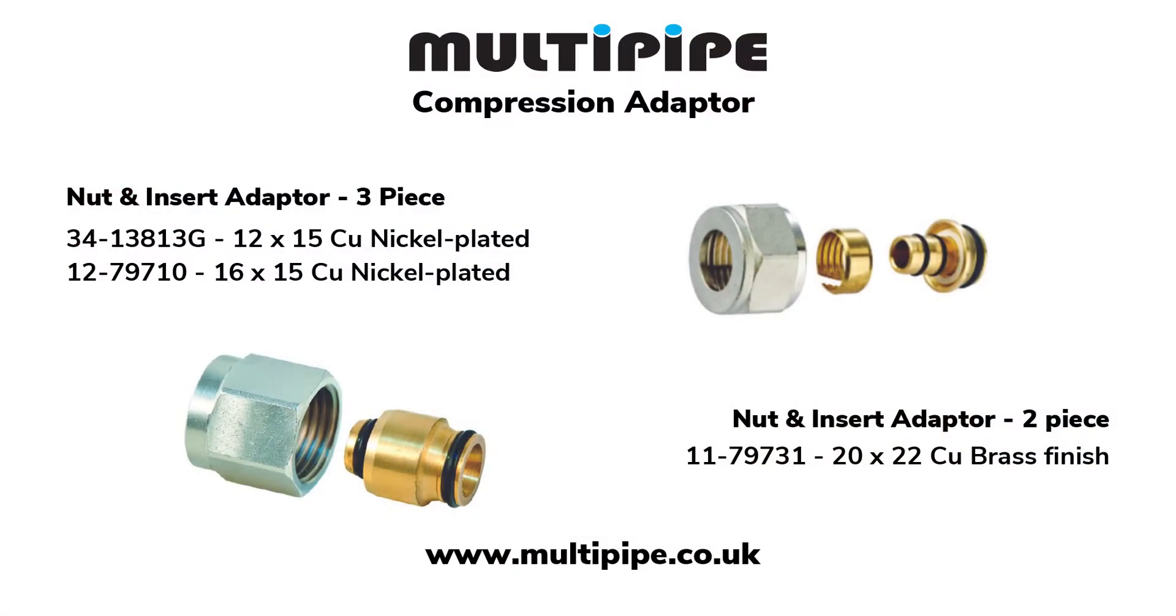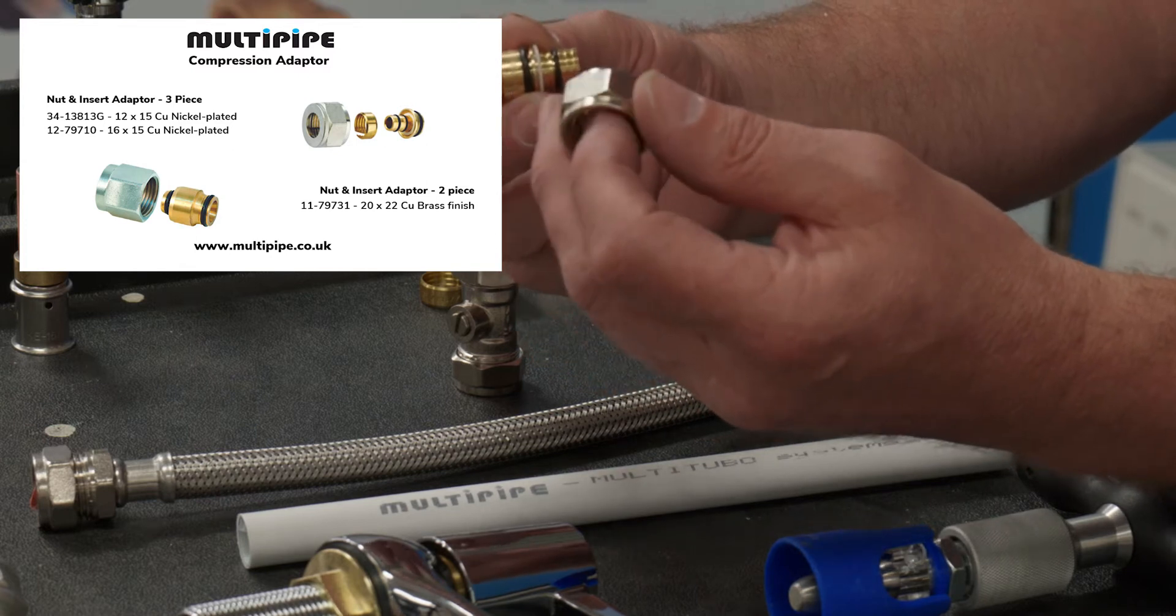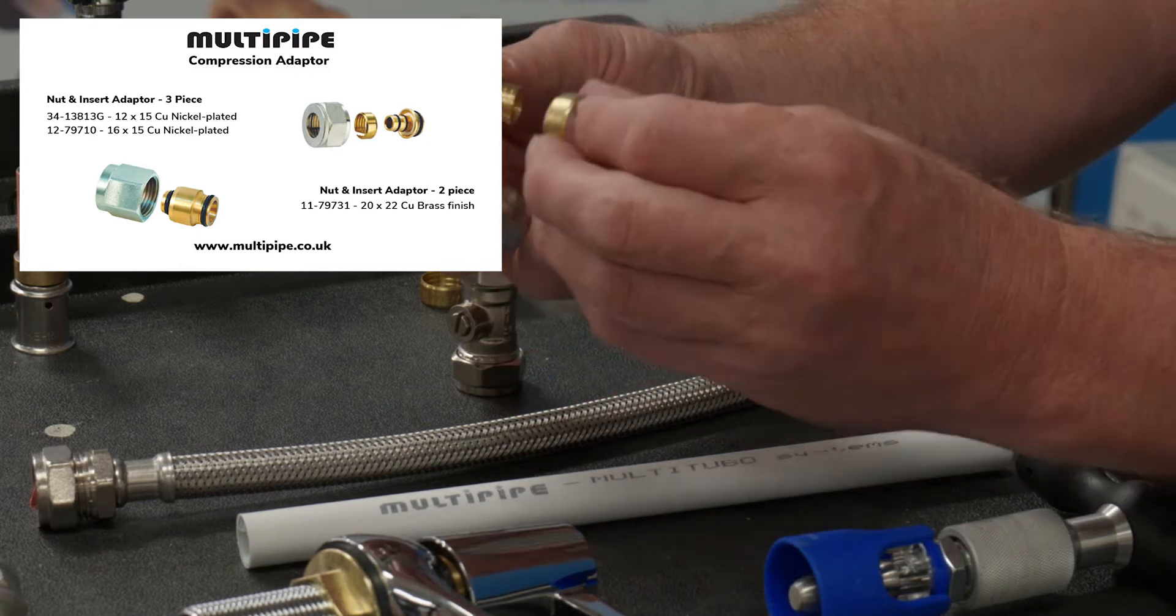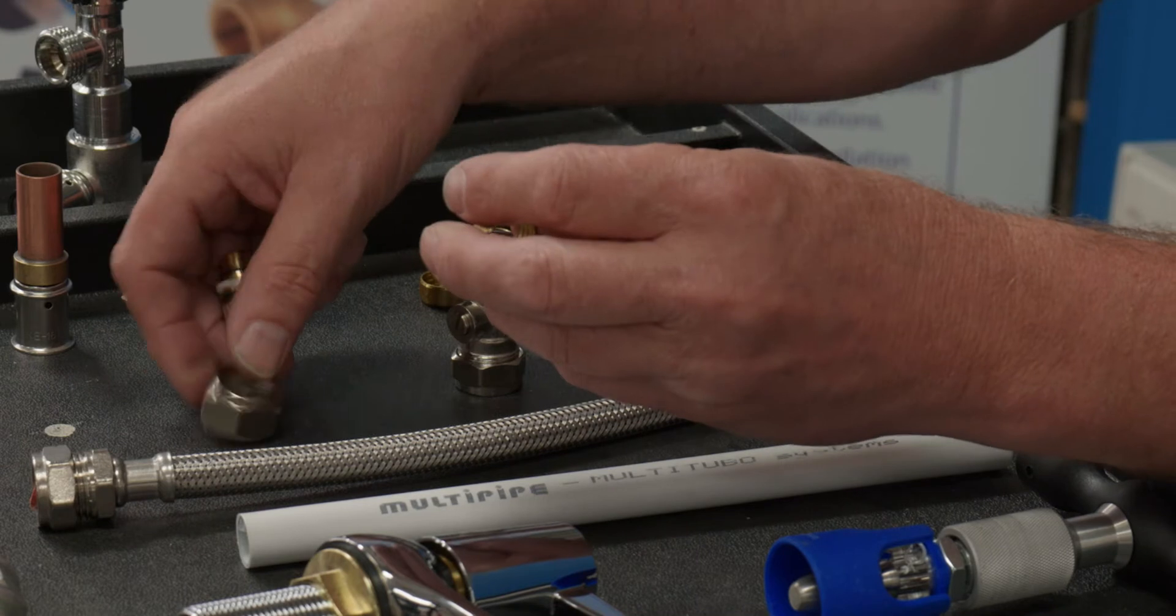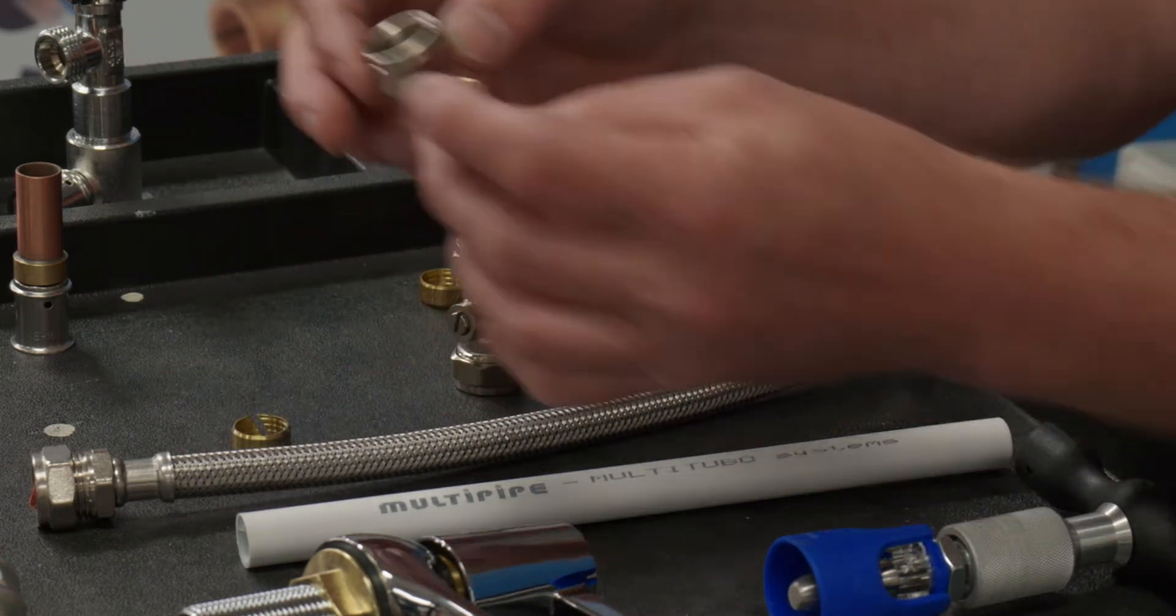These include, probably our number one seller is this compression adapter and this allows you to terminate directly onto a 15mm compression olive fitting and it's made up of three components: a 15mm nut, a split olive and an insert assembly.